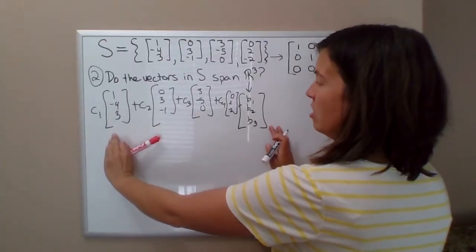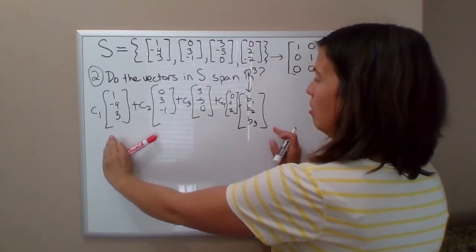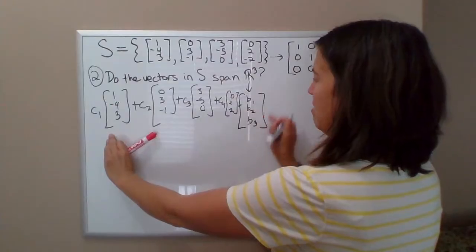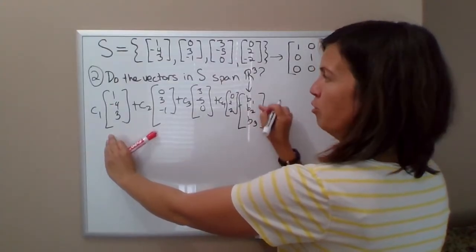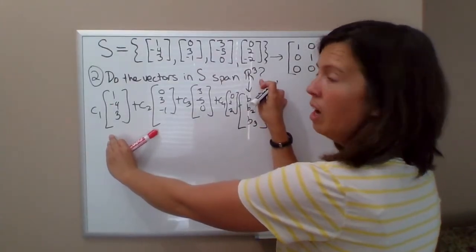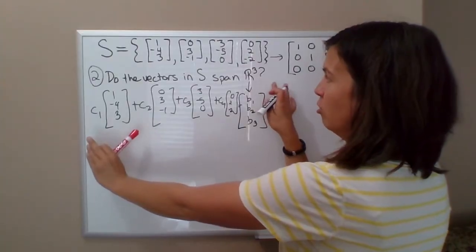For some numbers B1, B2, B3. If this equation has a solution, so it's consistent, for any values of B1, B2, B3, so for any vector in R³, then yes, the vectors span R³.